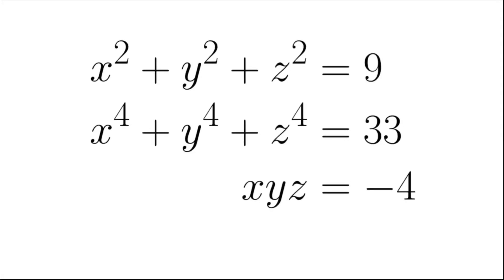In this video, we are going to find x, y, and z, such that the sum of squares equals 9, sum of the fourth powers equals 33, and the product equals minus 4.